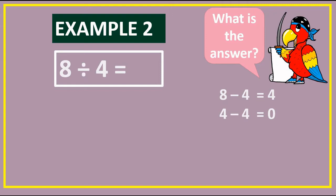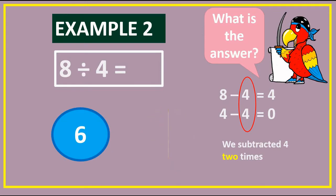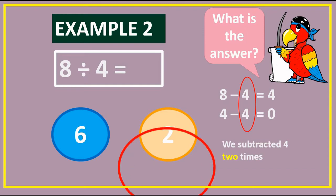We say 8 take away 4 equals 4, then 4 take away 4 equals 0. So how many times did we have to subtract 4? We subtracted 4 two times. So what is the answer to the problem 8 divided by 4 equals blank — is it 6 or is it 2?